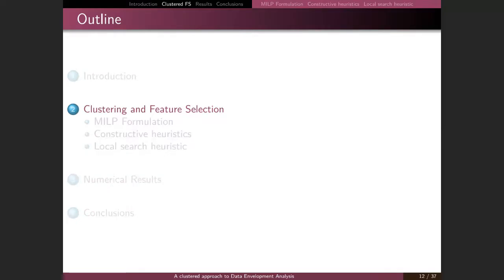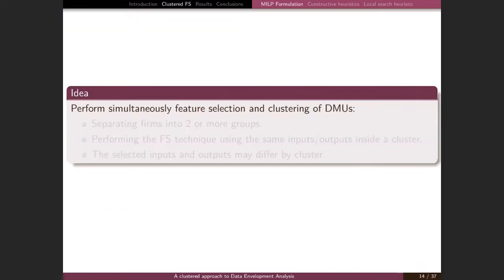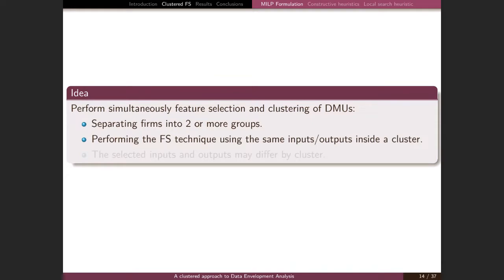Now I have explained how we can perform feature selection, and now we move to the clustering section. I will show the formulation we propose to perform simultaneously the clustering and feature selection. The idea is that we want to perform at the same time the selection and clustering on the firms. Regarding the clustering, we want to separate all the firms into two or more groups, performing the feature selection technique on inputs or outputs inside the cluster. Something relevant is that the selected inputs and outputs have to be the same within a cluster but may differ between clusters.